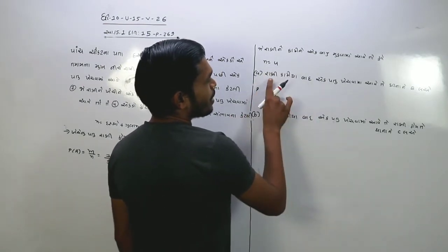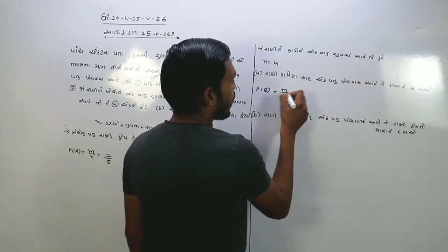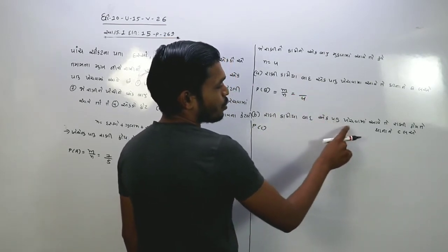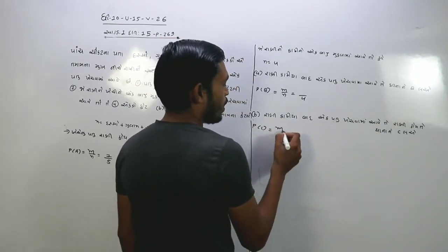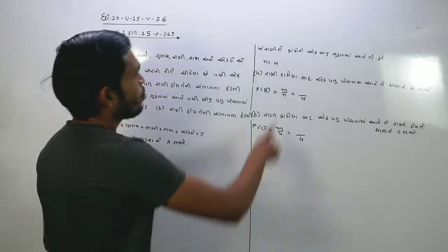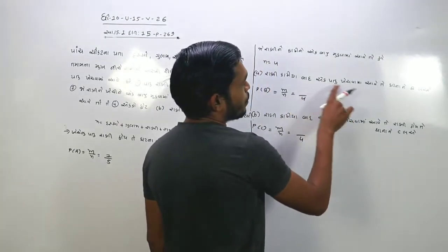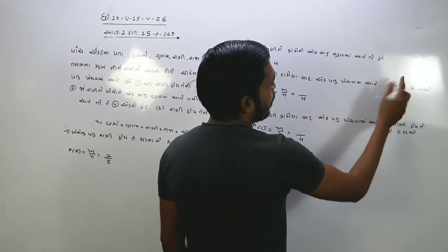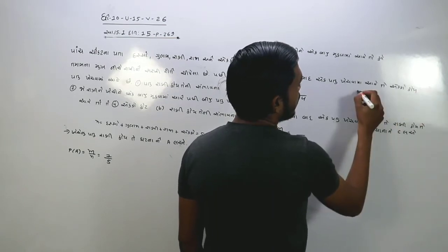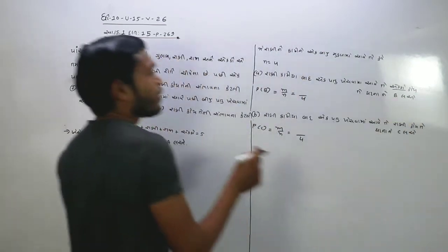ચાર. બાદ આપણે લખીએ – જે કે રાણી કાઢ્યા બાદ એક પત્તુ ખેંચવામાં આવે, તો તે કેમ ભાગ્યા? એ ની કૂલ આપણે ચાર. કેમ ચાર? મિત્રો, કારણ કે રાણી કાઢ ને એ ગ વાજુ મૂકી – ત્રો ઉછૌ.